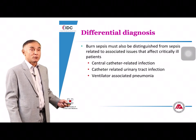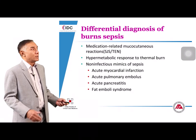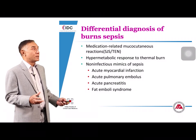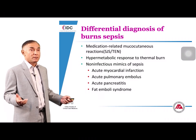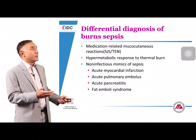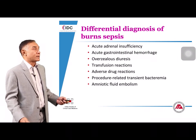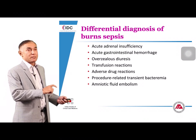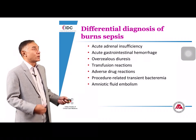Differential diagnoses for burn wound sepsis include central line infections, urinary tract infections related to the Foley catheter, and ventilator-associated pneumonia. Additional conditions such as the hypermetabolic response to thermal burn, the SIRS response itself, pancreatitis, and procedure-related transient bacteremia can all mimic sepsis. Careful patient examination is required to sort out the source before starting antibiotics.